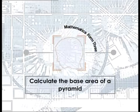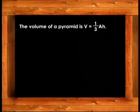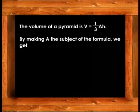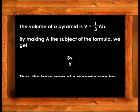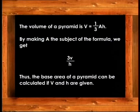To calculate the base area of a pyramid, the volume formula V = (1/3)AH is rearranged by making A the subject, giving A = 3V/H. Thus, the base area of a pyramid can be calculated if V and H are given.